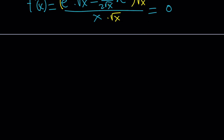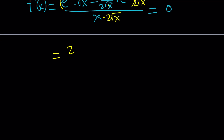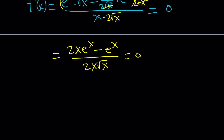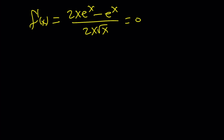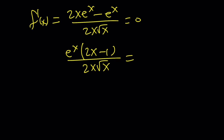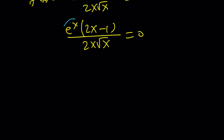After multiplying through by 2√x, we get f'(x) = (2x·e^x − e^x) / (2x√x). Setting the numerator equal to zero and factoring out e^x gives us (2x − 1) / (2x√x) = 0. Since e^x can never be zero, we need 2x − 1 = 0, which means x = 1/2 is our critical point. Also, recall that x must be greater than zero — that is the domain of f.